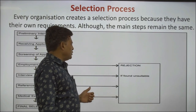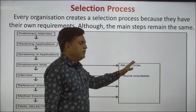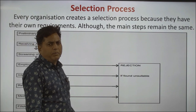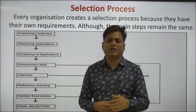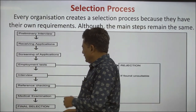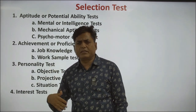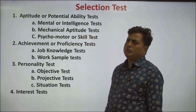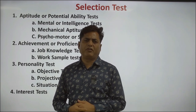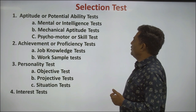After all these steps, the employee is finally selected. If an applicant is not found suitable at any stage — the employment test, interview, or any other test — they will be rejected and will not be part of the selection process. During selection, we organize many tests to check the capability and knowledge of the employee. The first test is the aptitude or potential ability test.